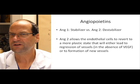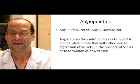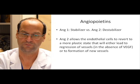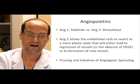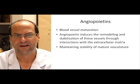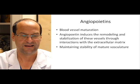Why do we need a destabilizer? Since we are constantly growing, new vessels may need to sprout from pre-existing ones, but they can only sprout from those pre-existing ones if the pre-existing vessel reverts to a more plastic state that will then either lead to the regression of vessels in the absence of VEGF, or to the formation of new vessels in the presence of VEGF. Angiopoietin 2 is therefore important for pruning and the initiation of angiogenic sprouting. Overall, the roles of the angiopoietins are for blood vessel maturation — they induce the remodeling and stabilization of blood vessels through interactions with the extracellular matrix, and they maintain stability of the mature vasculature.